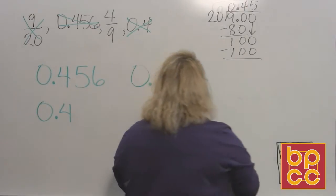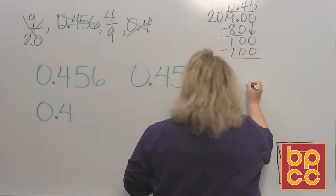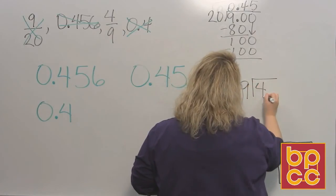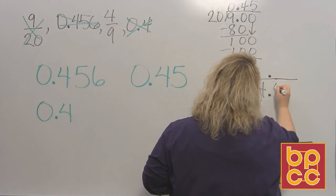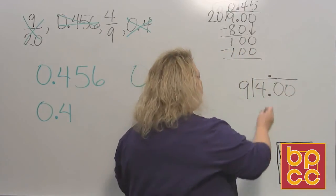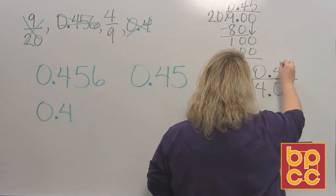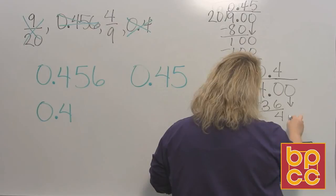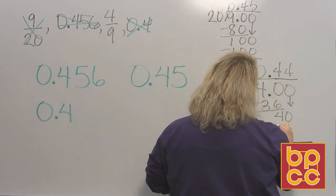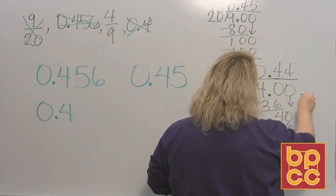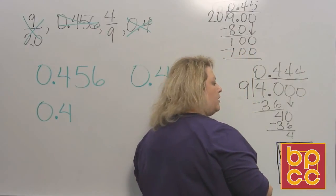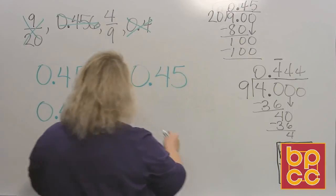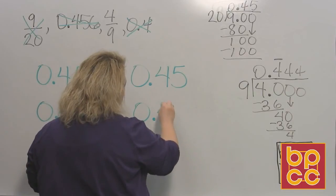And we have one left to change, 4 ninths. So let's change that one. That would be 9 on the outside, 4 on the inside. Add some zeros, and start dividing. 9 does not divide into 4, so that's zero. 9 divides into 40 four times. That makes 36. Subtract, that gives me 4 left over, bring down a zero. 9 divides into 40 four times. That's 36. Subtract, that leaves me 4. If I were to add another zero, it would keep repeating fours. So this is 0.4 and it's repeating. So when I write my answer, I'm going to put a repeater bar over my 4.